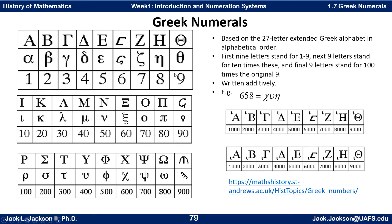They had a number system based on this 27-letter extended Greek alphabet in alphabetical order. The first nine letters, either upper or lowercase, represent the first nine natural numbers: 1, 2, 3, 4, 5, 6, 7, 8, and 9. The next nine letters represent, in alphabetical order, the first nine multiplied by 10 — so iota is 10, kappa is 20, and so forth: 10, 20, 30, 40, 50, 60, 70, 80, and 90.